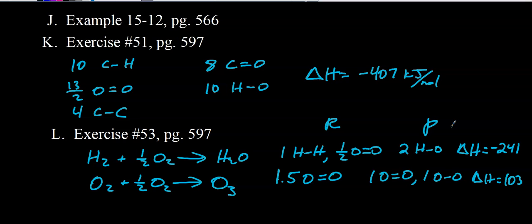For letter C, we have formation of ozone from elemental oxygen. In the reactants we have 1.5 moles of O=O double bonds. The Lewis structure for ozone has one double bond and one single bond between oxygens. The value we get is 103 kilojoules, but the value in the back of the book is 143 kilojoules per mole. The difference is quite significant, possibly because of the effect of resonance — ozone doesn't really have one pure double bond and one pure single bond.